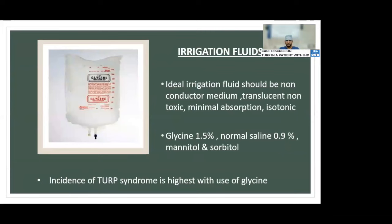Regarding irrigation fluids: the ideal irrigation fluid should be non-toxic, non-conductive of electricity, translucent or transparent, minimally absorbed, isotonic, and easy to eliminate. There is no ideal irrigation fluid currently. Most commonly used are glycine 1.5%, normal saline 0.9%, mannitol, and sorbitol. The incidence of TURP syndrome is highest with glycine.